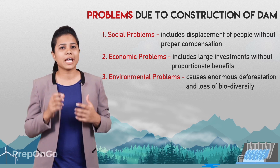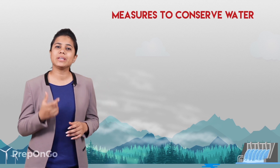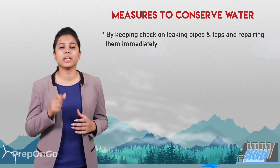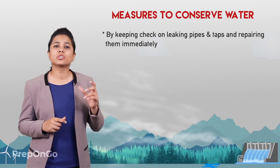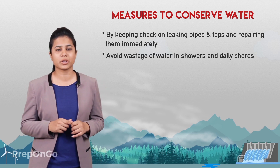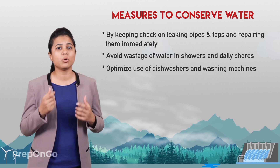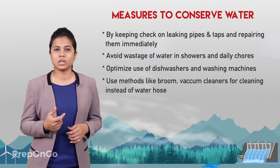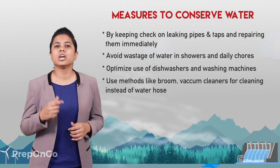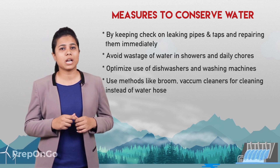Our small initiatives can save water resources in a big way and also conserve them for future generations. By making small changes in our daily habits, we can conserve water. We can keep a check on leaks in pipes and taps and repair them immediately if found. We should avoid wastage of water while taking showers and close taps when not in use. We should optimize the use of dishwashers and washing machines by using them only when full. Instead of using a water hose for cleaning cars and pavements, we can use alternatives like brooms or vacuum cleaners.